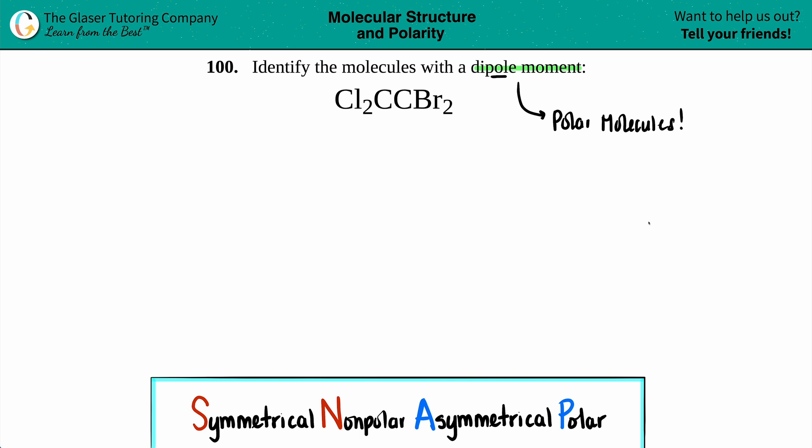I'd like to see the bonds to determine if a molecule is symmetrical or asymmetrical. Let's draw the Lewis structure. The Lewis structure gives you a lot of information: hybridization, molecular geometry, molecular polarity, bond polarity.